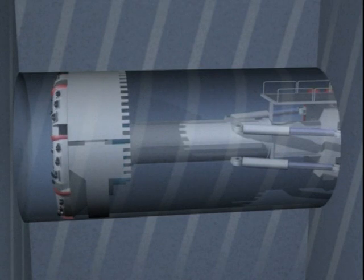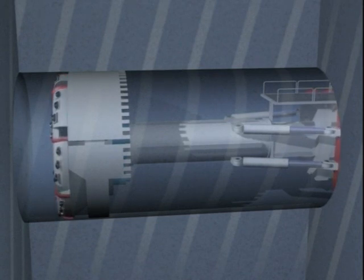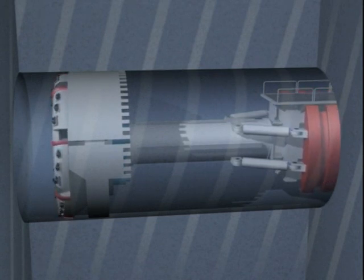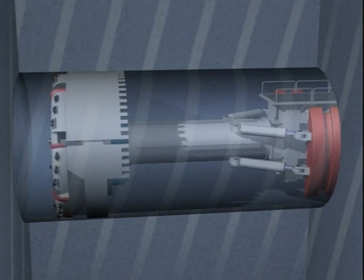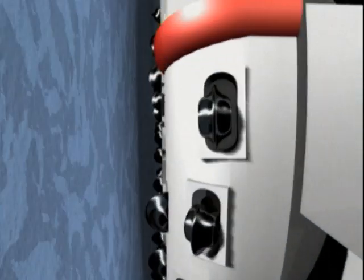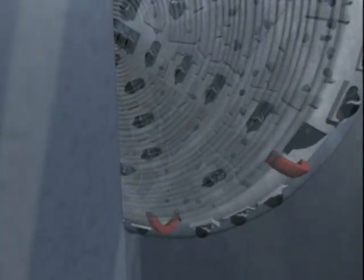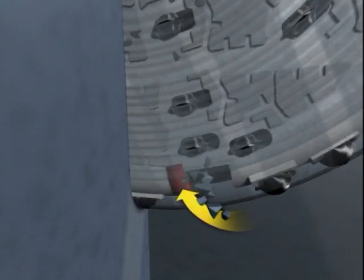This animated sequence shows how the so-called gripper functions. The automated gripper presses against the rock at the sides. The rotating cutting head is pressed against the tunnel face with a force of 26 tons, and under that pressure each roller cutter chips the solid rock away.